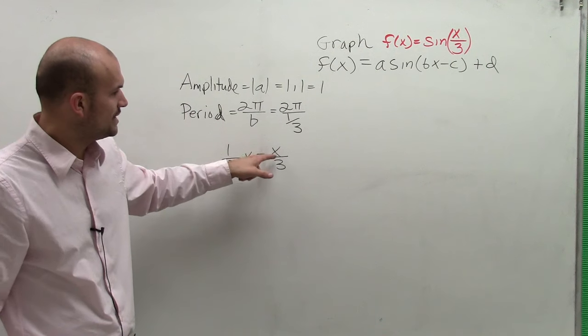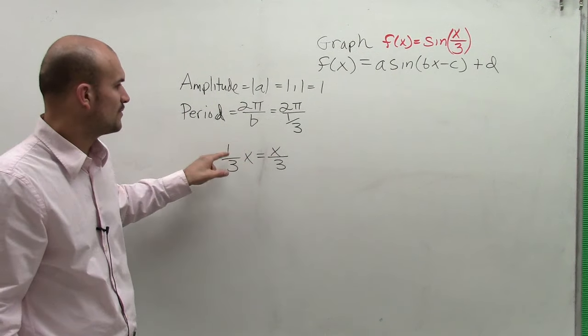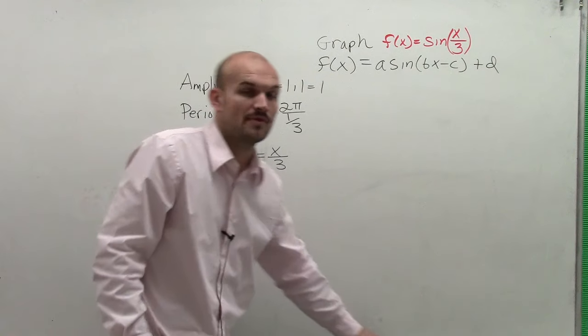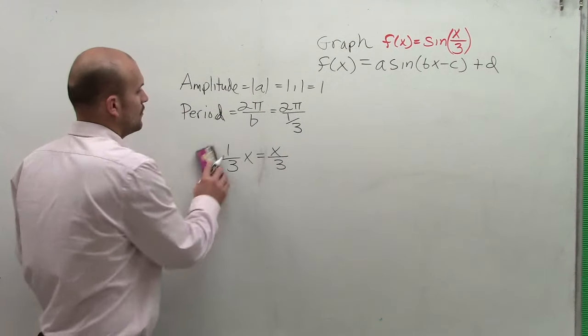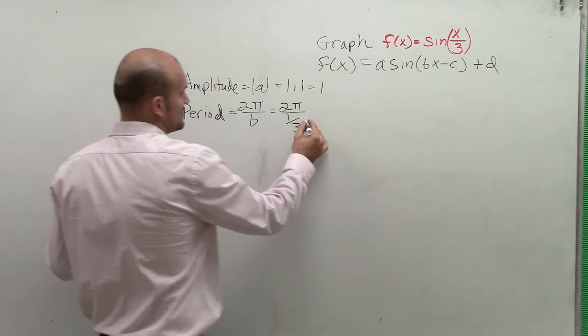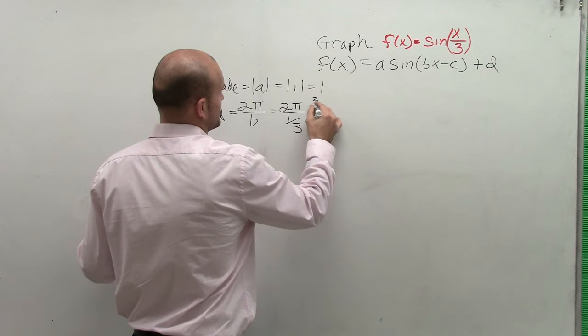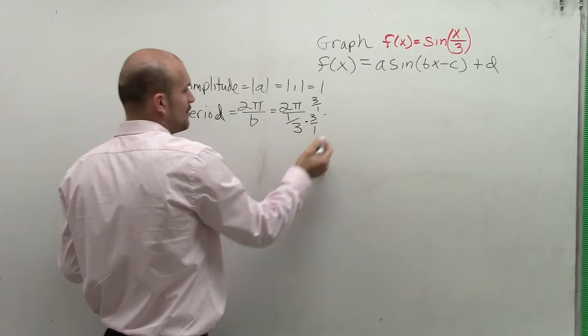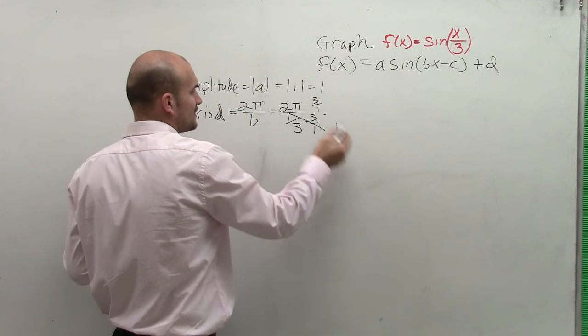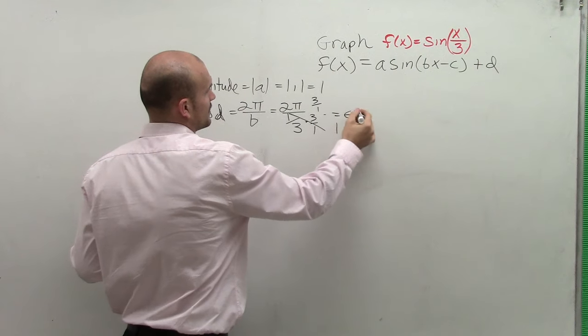Those are equivalent. So you've got to be careful. When you have x over 3, remember, we can rewrite that as 1 third x. So now, to simplify this, I multiply by the reciprocal on the top and the bottom. And any number multiplied by the reciprocal multiplies to 1. And therefore, I end up with 6 pi.